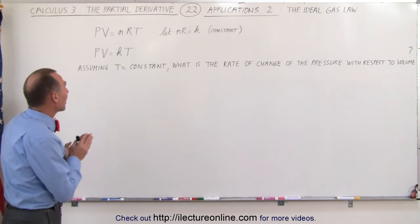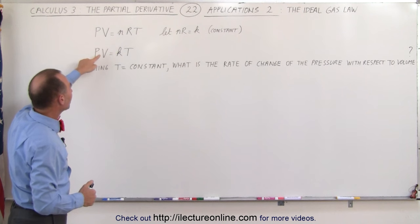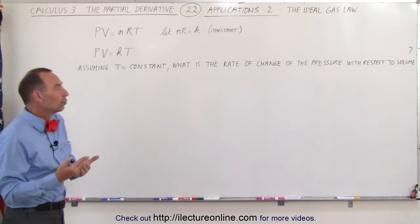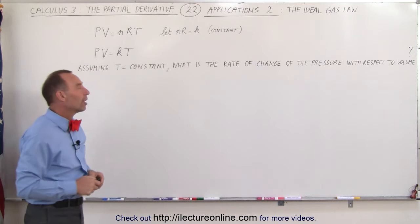Now what we're trying to find is the rate of change of the pressure with respect to volume as the temperature remains constant. We're going to assume the temperature remains constant. And so how does the pressure change with the change in the volume?